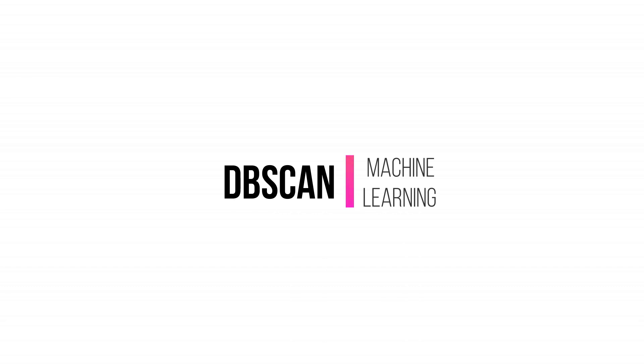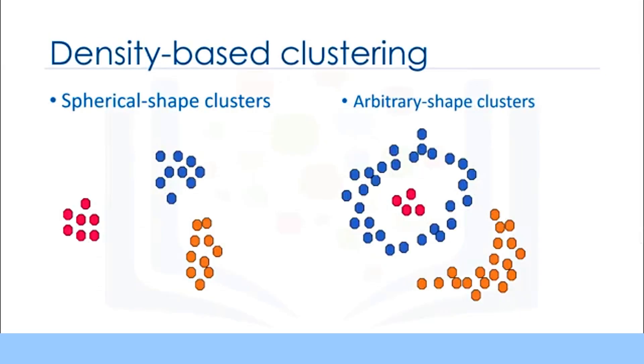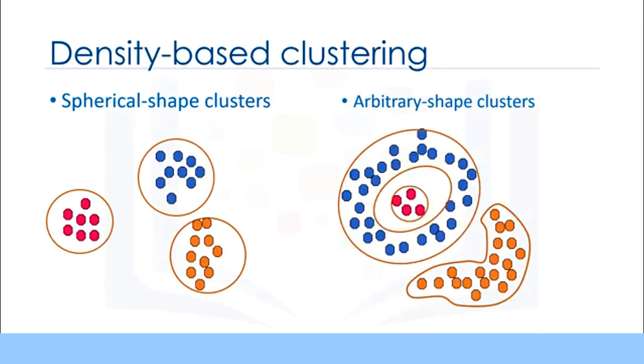Most of the traditional clustering techniques, such as k-means, hierarchical, and fuzzy clustering, can be used to group data in an unsupervised way. However, when applied to tasks with arbitrary shaped clusters or clusters within clusters, traditional techniques might not be able to achieve good results. Elements in the same cluster might not share enough similarity, or the performance may be poor.